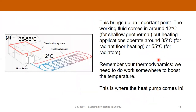This brings up an important point. In winter, a shallow geothermal system might deliver working fluid at around 12°C, but you need the water circulating through your baseboard radiators or radiant floor heating to be somewhere between 35 and 55°C. That's obviously much hotter than your working fluid. So we need to do work to the fluid to boost the temperature — and that's where heat pumps come in.